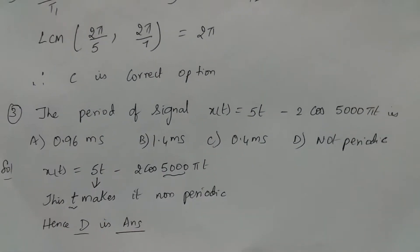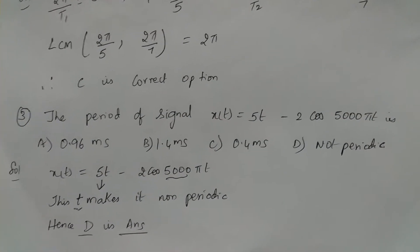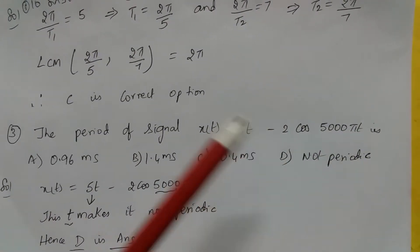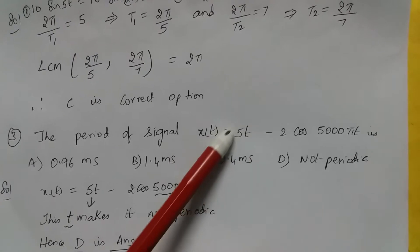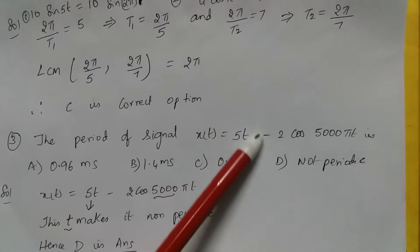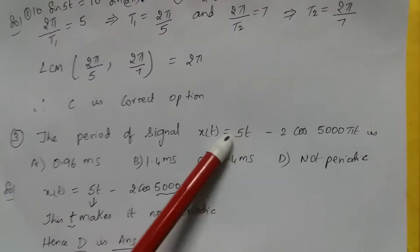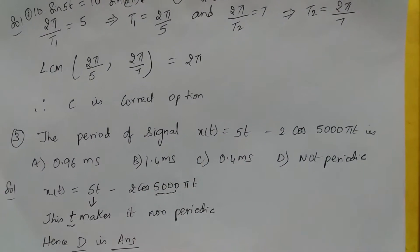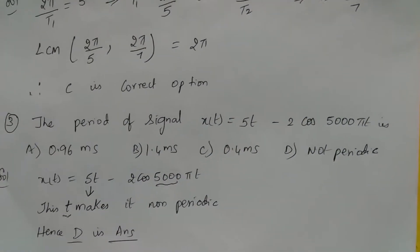Now there is one more signal x(t) which is equal to 5t minus 2 cos 5000π t. So this is not a periodic signal. It can take any random value. So this makes this particular signal non-periodic. Therefore, D is the right option.